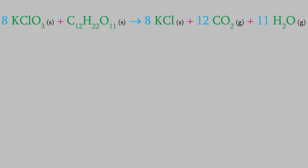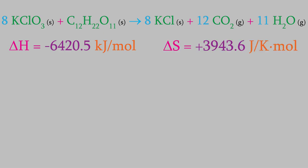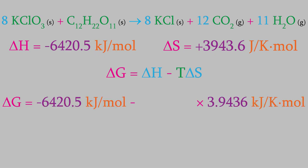For example, take the first reaction we mentioned in this video earlier. We saw that the enthalpy was negative 6420.5 kilojoules per mol. And, the entropy is positive 3943.6 joules per kelvin mole. We'll plug these into the equation. But, first, notice that the enthalpy used kilojoules, and the entropy uses joules. We'll need to use the same unit in both terms, so we should convert one of these units. It doesn't matter which of them we convert, but I'll change the entropy units to kilojoules per kelvin mole, which gives us 3.9436.